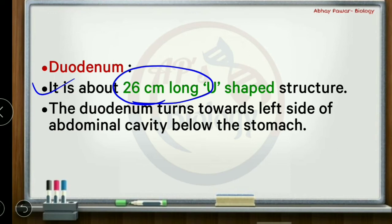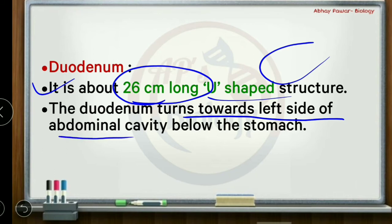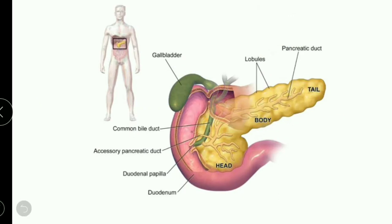The duodenum is 25 to 26 centimeters in length and is U-shaped. It is the first part of the small intestine after the stomach. It turns toward the left side of the abdominal cavity below the stomach, forming that characteristic U-shape tube.